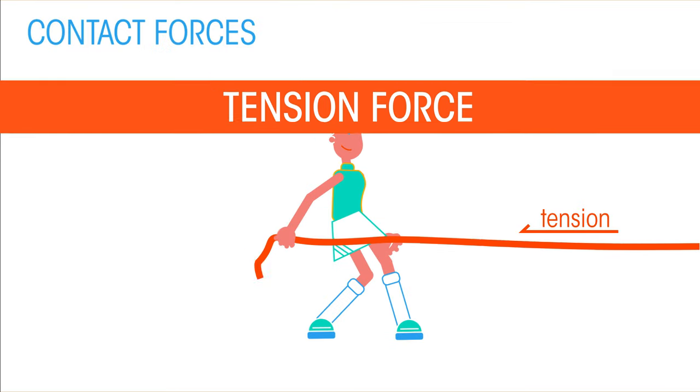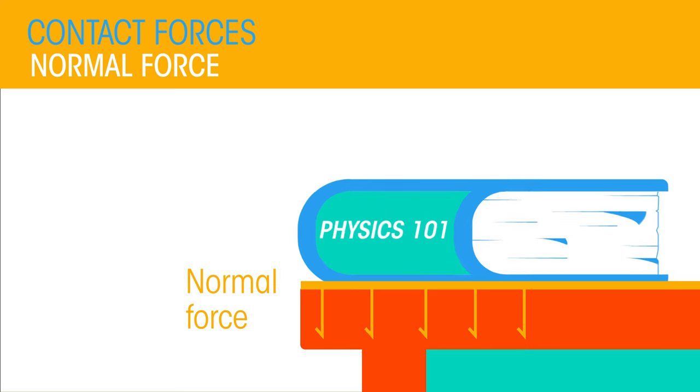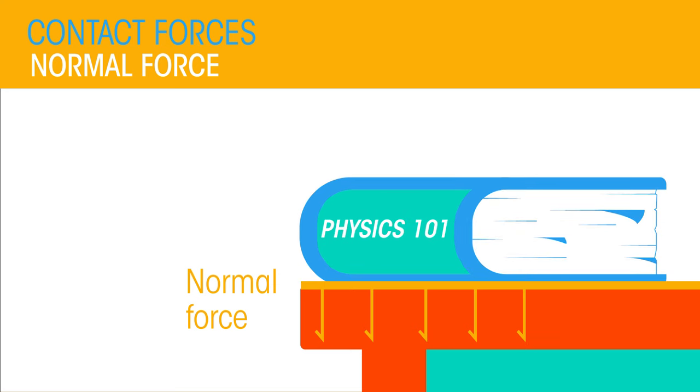Tension is exerted through a rope when we pull something. Normal contact force supports an object that is resting on a surface. For example, between your books and your desk.